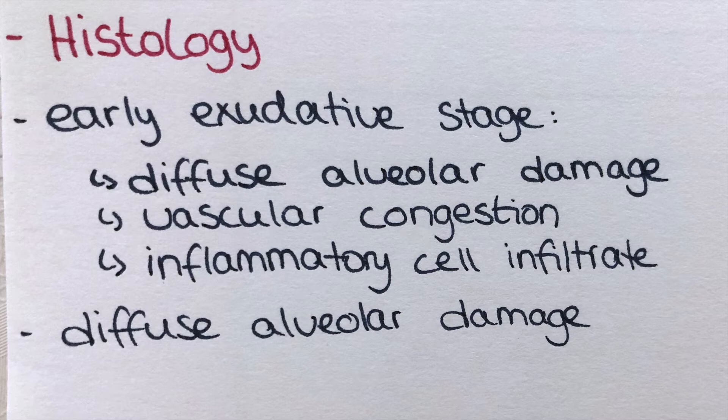Regarding the histology of this atypical pneumonia, we can divide it into the early exudative stage and the general stage. In the early exudative stage there is diffuse alveolar damage, vascular congestion, and interstitial and airspace edema. Furthermore, there is inflammatory cell infiltrate — neutrophils, macrophages, lymphocytes — all the cells the immune system sends to fight the infection.